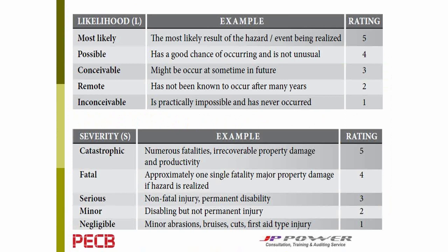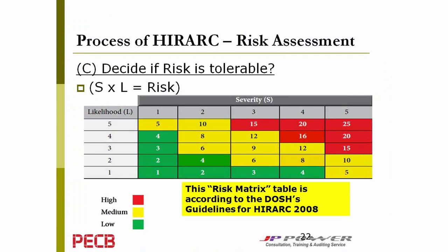Once the risk has been assessed, we need to determine the risk level. Using the same ratings for likelihood and severity, the risk matrix shows three colors: green, yellow, and red — determined by multiplication. For example, if the likelihood is 5 and the severity is 3, we get 15, which we classify as high risk (red). Yellow indicates medium risk, and green indicates low risk.